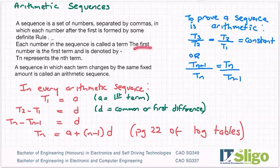Each number in the sequence is called a term. The first term is denoted by T1. So every term is called T. The first term is called T1, the second term is called T2, the third term T3, and so on. And then Tn, which you will see lots in this chapter, represents the nth term.